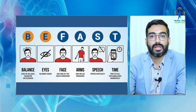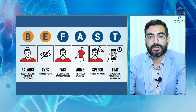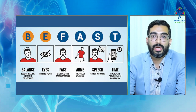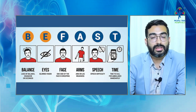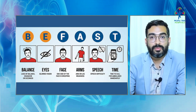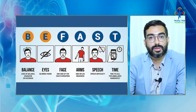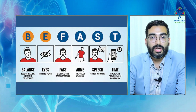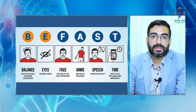What are the symptoms of stroke? We can remember them with BEFAST. B is for balance — whenever there is any sudden onset imbalance. E is for eye — when a patient suddenly develops blurring of vision, loss of vision, or double vision.